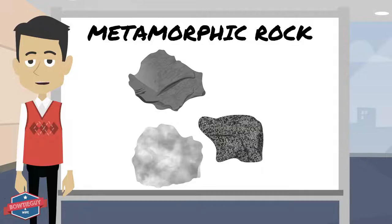Three types of metamorphic rock include schist, gneiss, and marble.